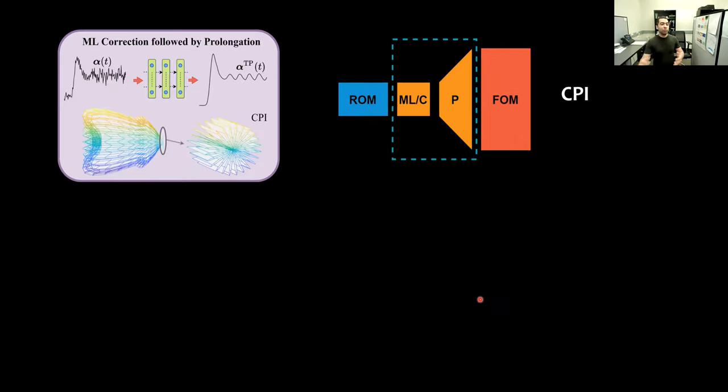Here we interfere in the ROM space to improve the ROM-FOM coupling. First, we introduce the machine learning correction followed by prolongation, or CPI. In this case, we add the correction in the reduced space, or the low-order space. Then we do the reconstruction or prolongation step on the corrected ROM, not on the original ROM.